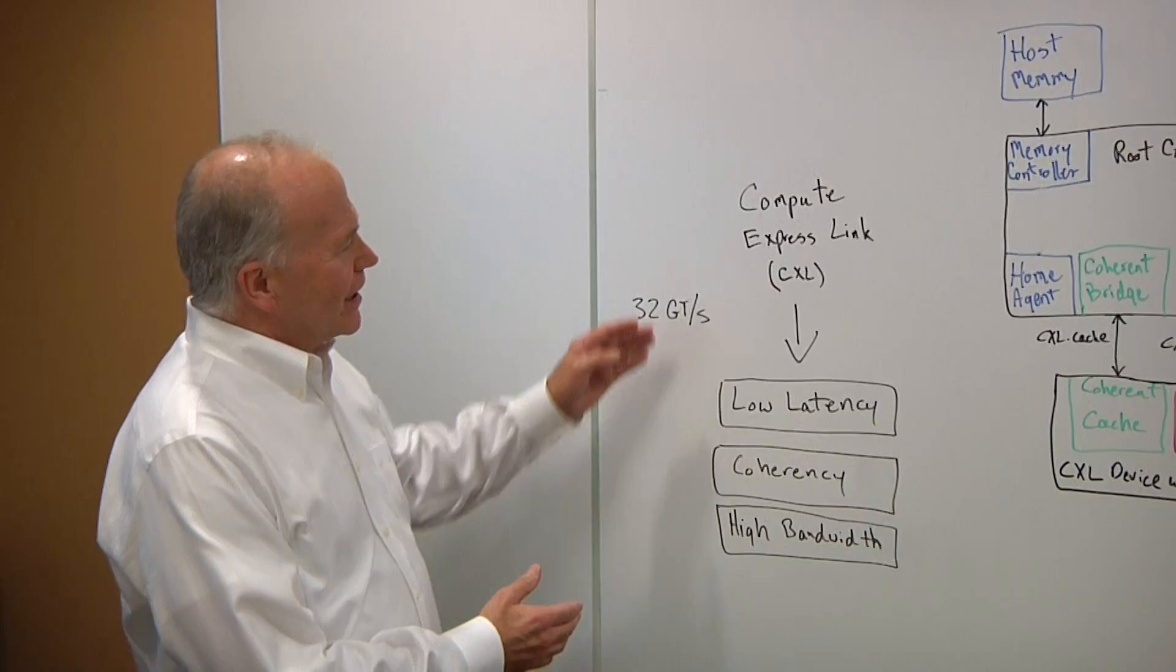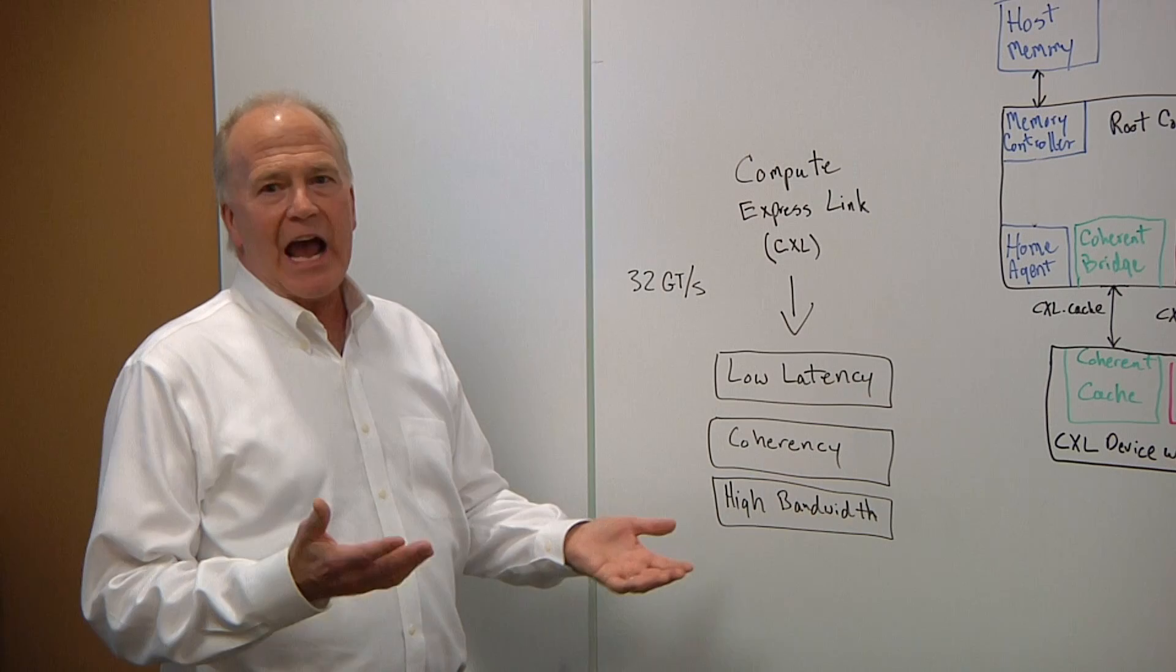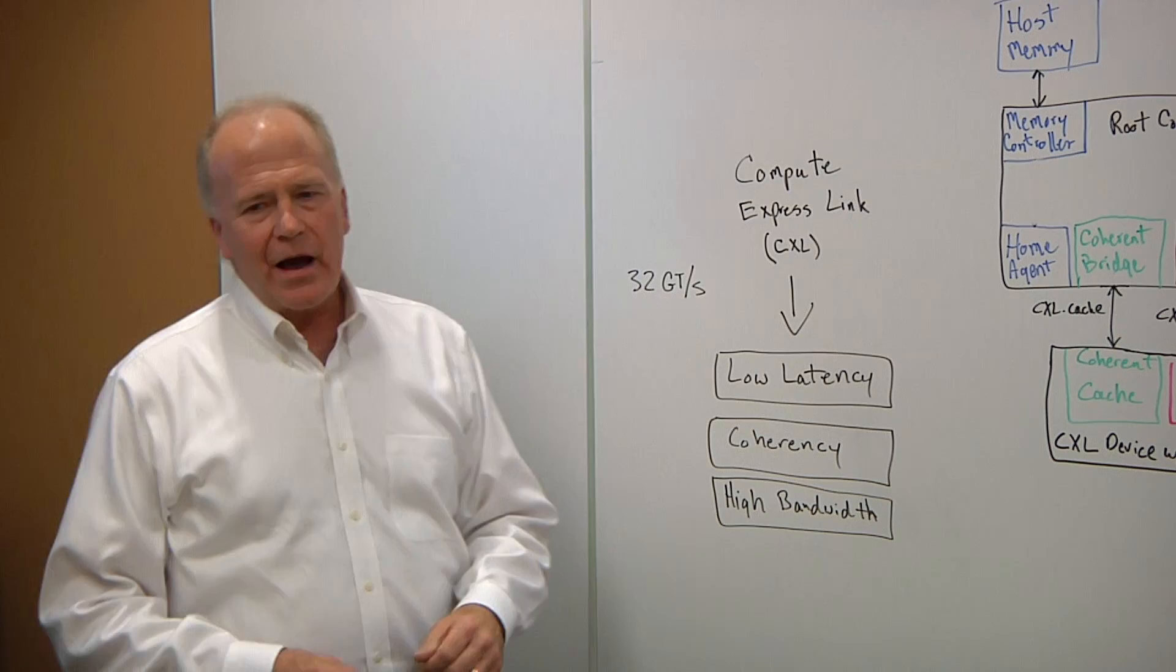Why don't you draw this out for us? Sure, I'd be happy to do that. So Gary, what are we looking at here? Well, starting here on the left, a couple of the key features of Compute Express Link are listed here. It's an extremely low latency link. It maintains coherency so that you can share, you can cache memory of the host, and it's very high bandwidth.